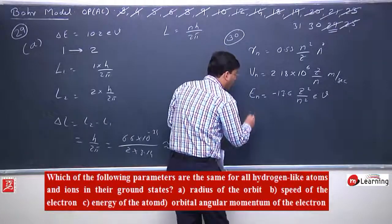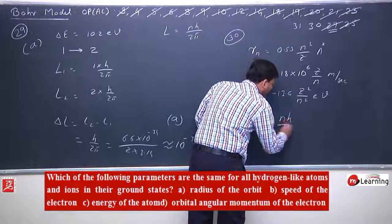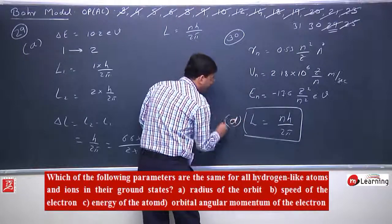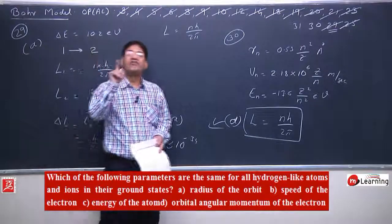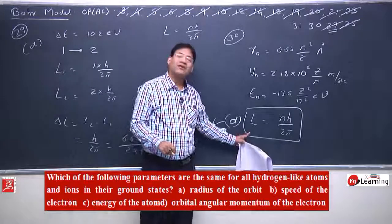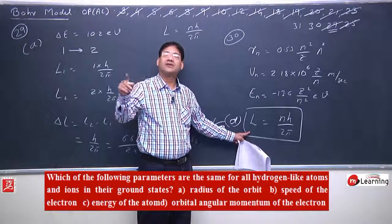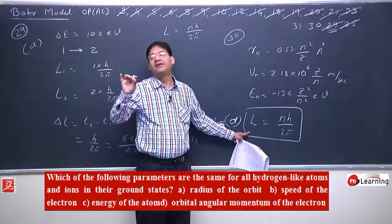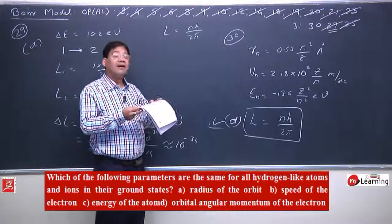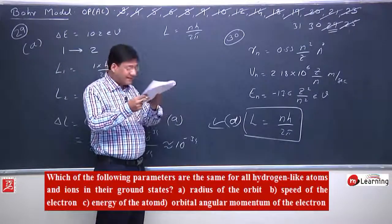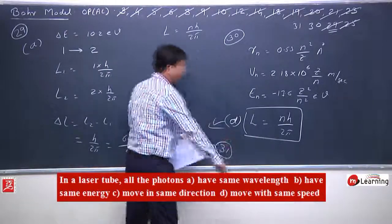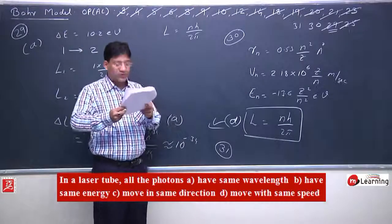Orbital angular momentum is given by nh/2π. And observe — orbital angular momentum is independent of Z. So whether it's hydrogen or hydrogen-like, the angular momentum of any electron in the ground state, 1st orbit, 2nd orbit, 3rd orbit will be the same. For hydrogen, helium positive ion, lithium 2+ ion — all of their angular momenta will be the same. Hence, the correct answer is D: orbital angular momentum would be the same for all hydrogen or hydrogen-like ions.